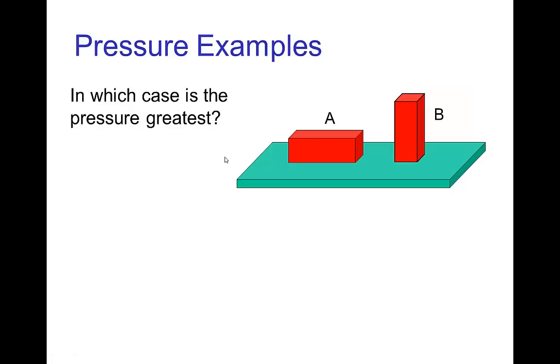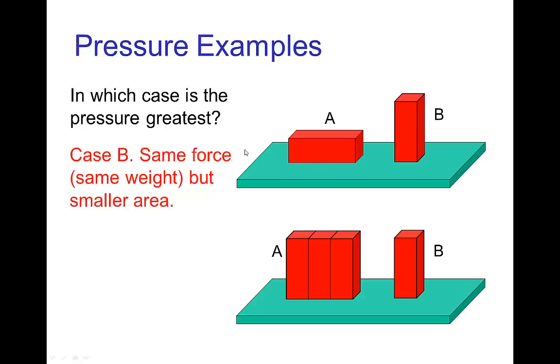Well, let's look at some examples. Let's say we have two bricks, similar bricks on a table. Which of the two is exerting the greater pressure? Well, if you think about it, the greater pressure would be the brick that's standing up because we have the same weight in the two cases, but brick B has a smaller area in contact with the table.